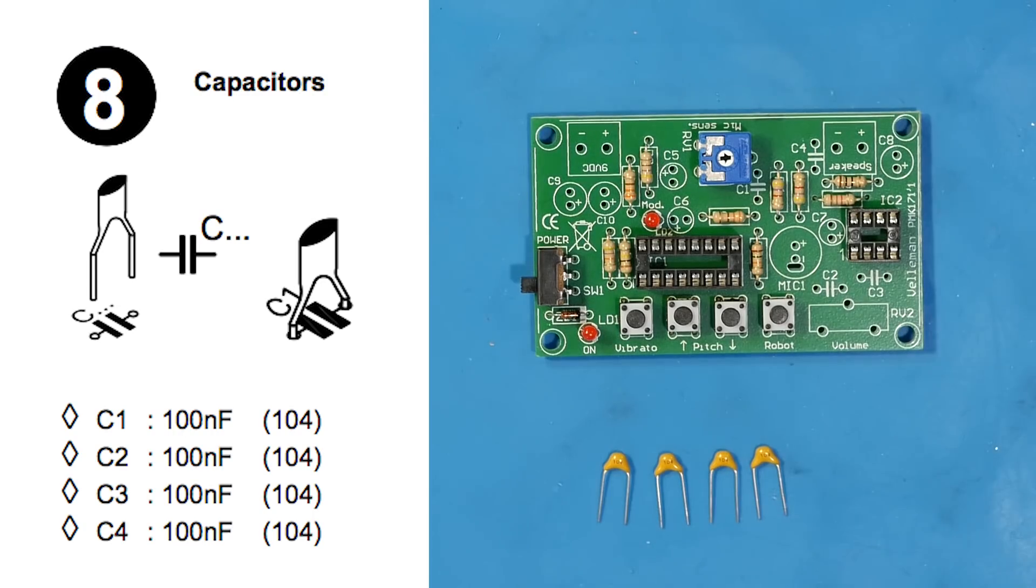In step eight, we place capacitors. If you look at the symbol on the instructions, you can see that these are non-polarized capacitors. So we need the four ceramic capacitors that come with the kit. They're all 100 nanofarads, marked 104. So we just need to place the four of these in C1, 2, 3, and 4 on the PCB.